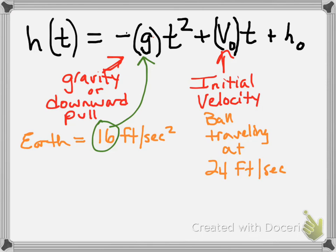So the initial velocity, again, is so if I'm throwing a ball at 24 feet per second from my arm, 24 is what gets plugged in to V of O.